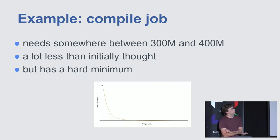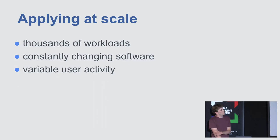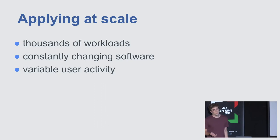Obviously this is data we'd like to have for basically all Facebook jobs, because the question is how much memory are we actually wasting. The tricky bit is doing this at scale. One problem is that trial and error like this is really tedious at scale. The other problem is you can't do this with constantly changing software and variable user activity. A long-running service like a web server at Facebook is completely driven by user activity — you can't do trial and error there.